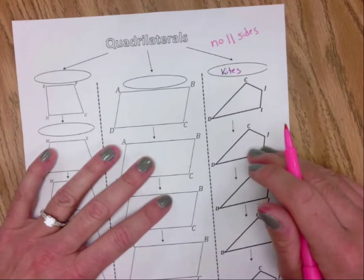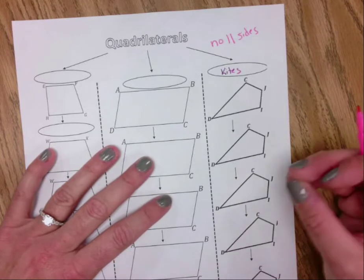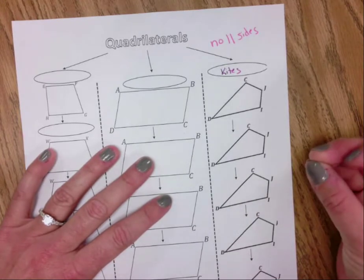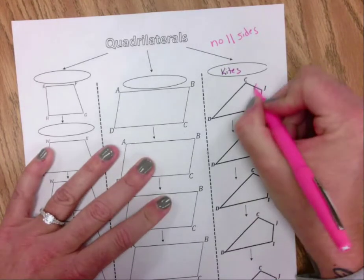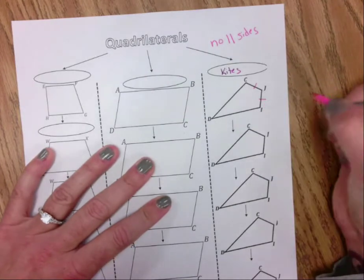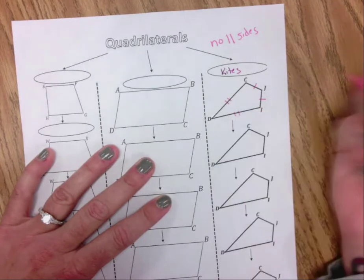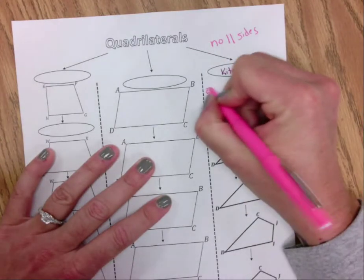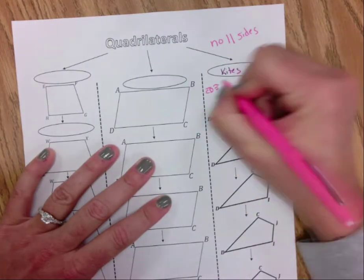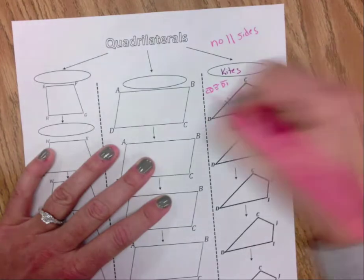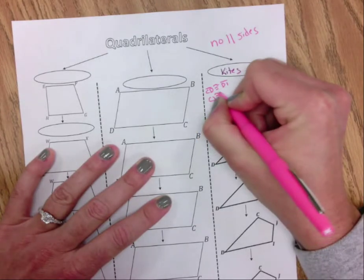But it does have two pairs of consecutive congruent sides. So that means Cj is congruent to Ji, and Dc is congruent to Di. So I'd write Cd is congruent to Di, and Cj is congruent to Ji.